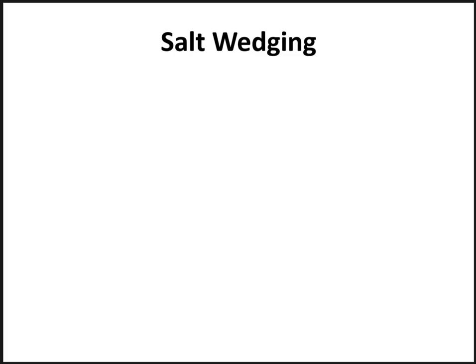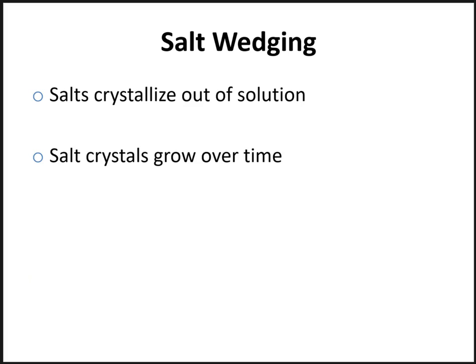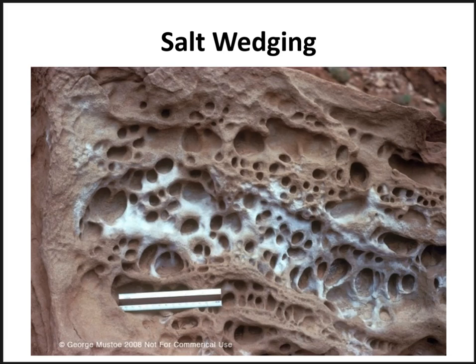Another form of mechanical weathering is salt wedging, which occurs when salts crystallize out of solution from water vapor. Sources of this salt water vapor include sea spray, splash, and fog. When water vapor evaporates off the rock, salts are left behind as tiny crystals. Over time, these crystals grow and pry apart the rock grain by grain. A picture of salt wedging shows many tiny holes in the rock and the white salt residue left behind.